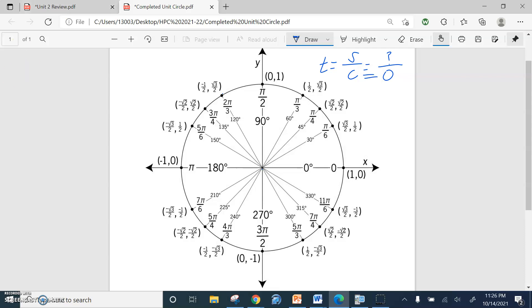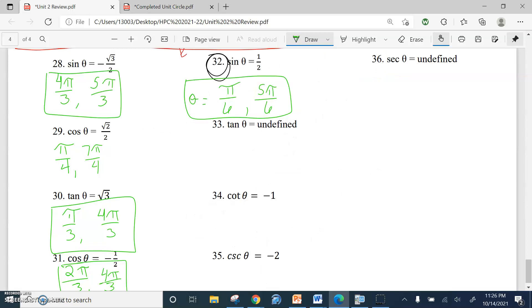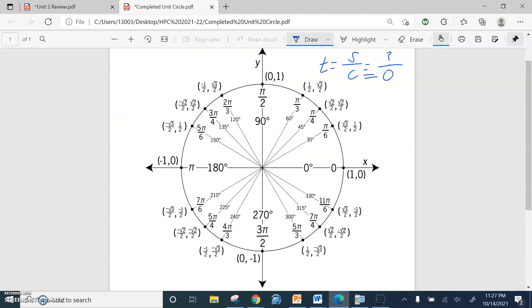So where is our cosine equal to zero? Well, that's pretty easy. Cosine, again, is our x term. That's right there. That's pi over two. So one answer is pi over two. Where's the other one where x is zero? Well, that's straight down the line at zero comma negative one. So that's three pi over two.